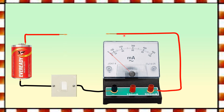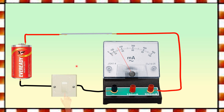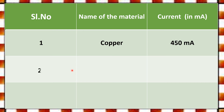Next, I will fill the gap with another material — the aluminium rod. Let us switch on the circuit. How much current is flowing now? It is 350 milli-amperes. Previously 450 milli-amperes was flowing when the copper rod was connected; now with the aluminium rod, the current has decreased to 350 milli-amperes. Let us note this in the table: Serial number 2, aluminium, 350 milli-ampere current.